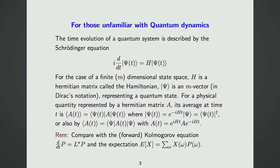There are quantum systems which describe the evolution of atoms and molecules, and the time evolution of such quantum systems is described by the famous Schrödinger equation. For simplicity, in the next few slides we only consider a finite dimensional case—the state space is finite dimensional.